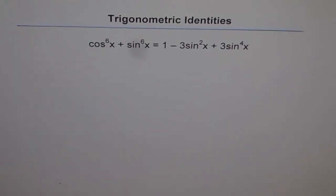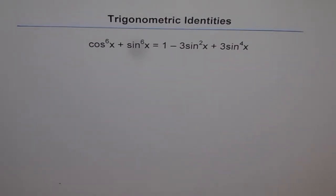Trigonometric identities. We are already over 50 identities by now and let's reach the target of 100. These are really good and difficult identities. This is one of the most difficult identities which you will do.